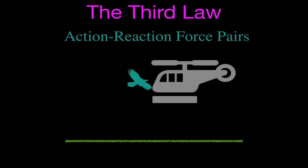We have the force-reaction pairs for the helicopter and the bird, which are going to collide. You could stop the video and try to draw the force pairs and label them correctly. When these two things collide, there's going to be a force on the helicopter from the bird, and then there's going to be a force on the bird from the helicopter. That's how you would draw it — H-B and B-H.